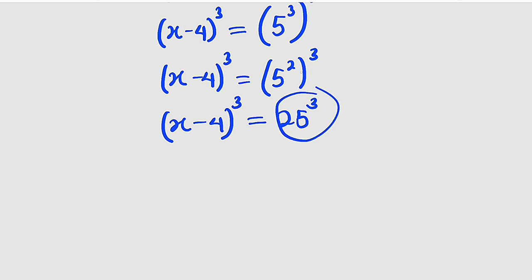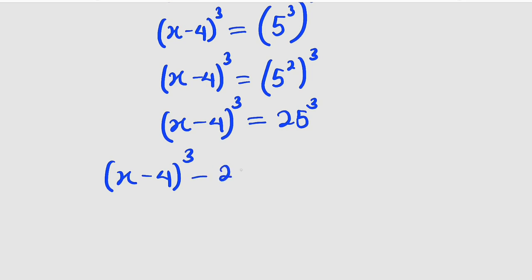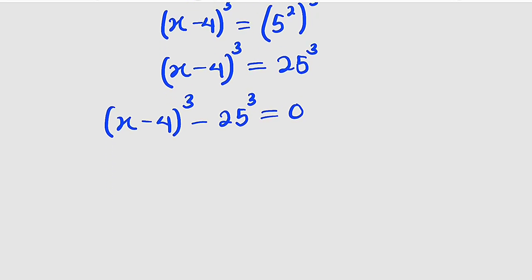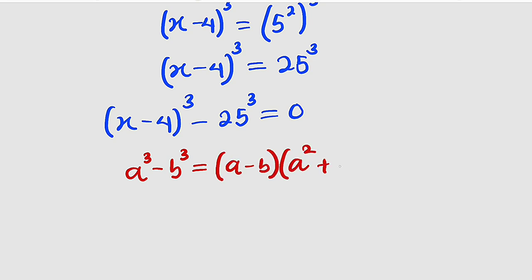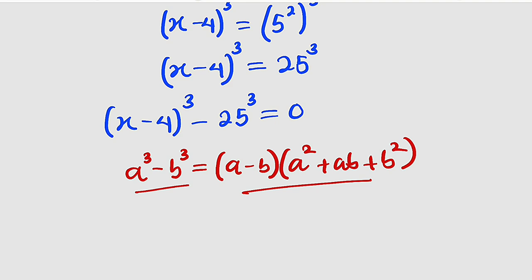Instead, let me take this one back to the left. We have x minus 4 raised to the power of 3 minus 25 raised to the power of 3, and this is equal to 0. What can you see? Difference of two cubes. What can you remember about difference of two cubes? If you have a to the power of 3 minus b to the power of 3, this is equal to a minus b multiplied by a squared plus ab plus b squared.